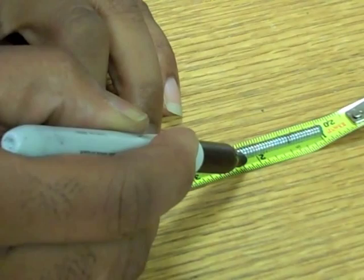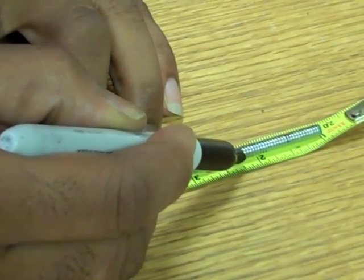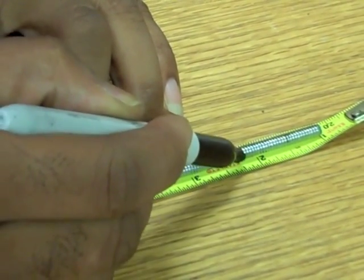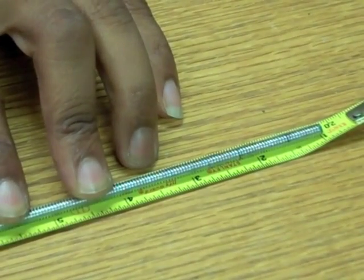After your marks are made, using a Dremel tool or other cutting instrument, cut lead post rails into previously measured segments.